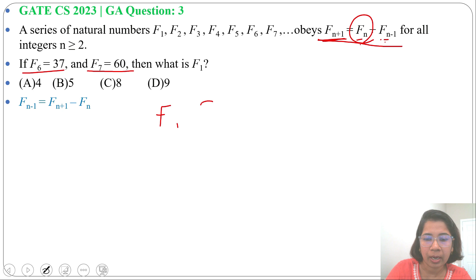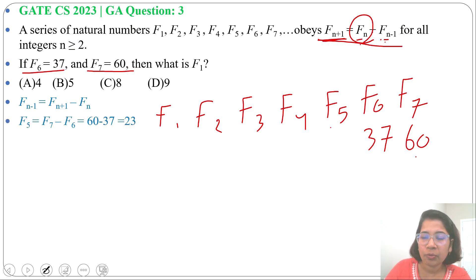So f(1), f(2), f(3), f(4), f(5), f(6), f(7). Now f(7) is 60 and f(6) is 37. So f(5) will be 60 - 37 = 23.